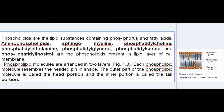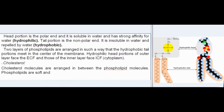Phospholipid molecules are arranged in two layers. Each phospholipid molecule resembles a headed pin in shape. The outer part is called the head portion and the inner portion is called the tail portion. The head portion is the polar end, soluble in water with strong affinity for water — hydrophilic. The tail portion is the nonpolar end, insoluble in water and repelled by water — hydrophobic. The two layers are arranged so that the hydrophobic tail portions meet in the center of the membrane, while hydrophilic head portions of the outer layer face ECF and those of the inner layer face ICF.